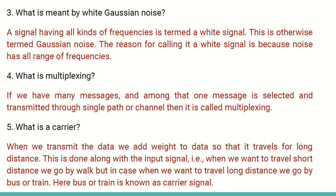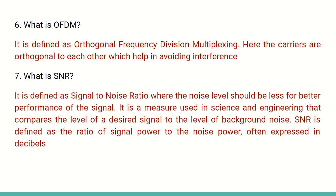When we want to travel a short distance we have no problem, but when we want to go for a longer distance we need to do that. For example, we are going to cover a shorter distance we can walk, but when you want to go for a longer distance, say about 100 miles, we will go by train or bus. The train or bus is nothing but the carrier signal.